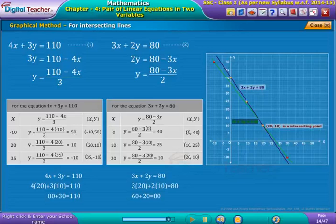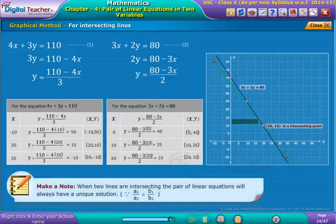Since (20, 10) is the intersecting point, the given pair of linear equations in two variables has only one solution. Make a note: in general, when two lines are intersecting, the pair of linear equations will always have a unique solution since A1/A2 is not equal to B1/B2.